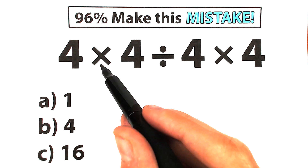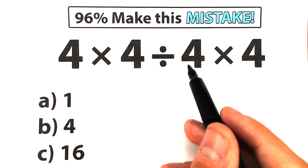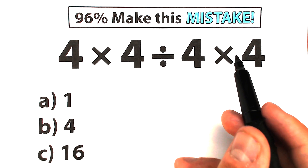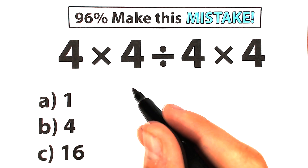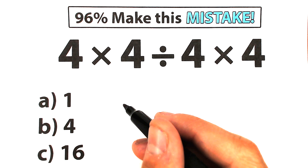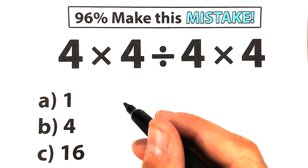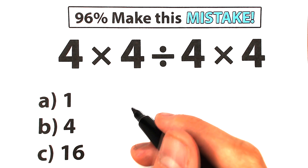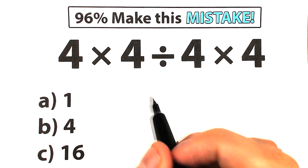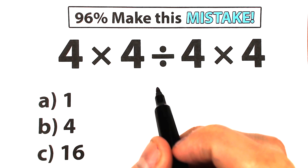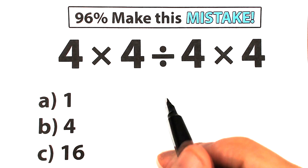So what do we have right here? 4 times 4 divided by 4 times 4. There are three options. Pause the video and try to solve it by yourself — let's check our answers in 30 seconds. This is a very tricky challenge, just trust me.